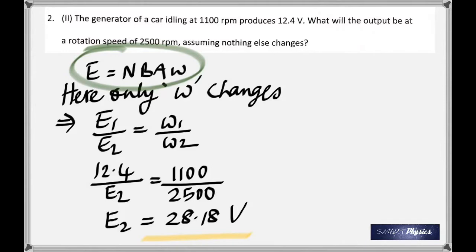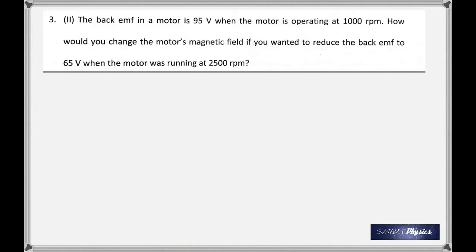Plug in the values and find E2. We didn't even change it into RPS or anything, it's just a ratio. You get 28.18 volts. But do remember that this formula is very important: that is the peak voltage produced by a generator.